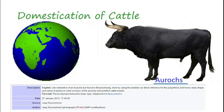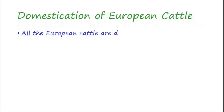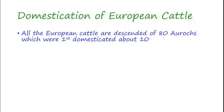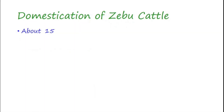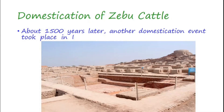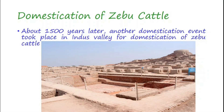All European cattle are descended from around 80 Aurochs which were first domesticated about 10,000 years ago in the Fertile Crescent region. The Fertile Crescent is a crescent-shaped region in the Middle East, spanning modern-day Iraq, Syria, Lebanon, Israel, Palestine, Jordan, and some regions of Egypt, Turkey, and Iran. About 1,500 years later, another domestication event took place in the Indus Valley for domestication of Zebu cattle. The Indus Valley is a region in Pakistan.